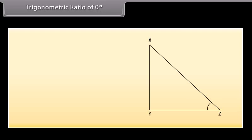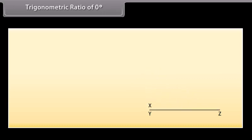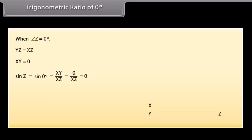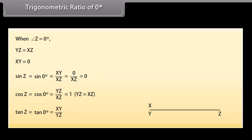For 0°, consider the right-angled triangle XYZ. As angle Z is reduced to 0°, XZ merges with YZ and XY becomes 0. Therefore, Sin 0° = XY/XZ = 0/XZ = 0. Cos 0° = YZ/XZ = 1. Tan 0° = XY/YZ = 0/YZ = 0.